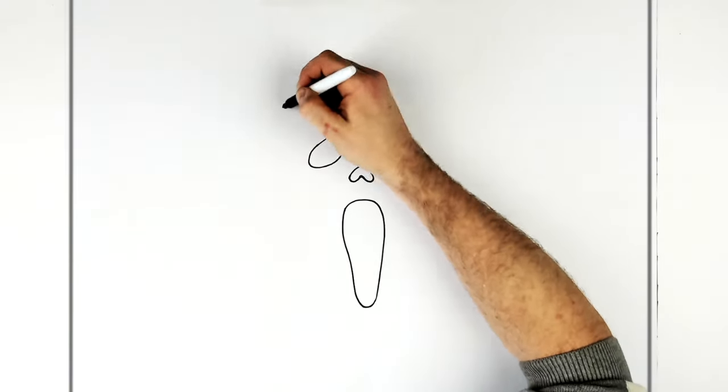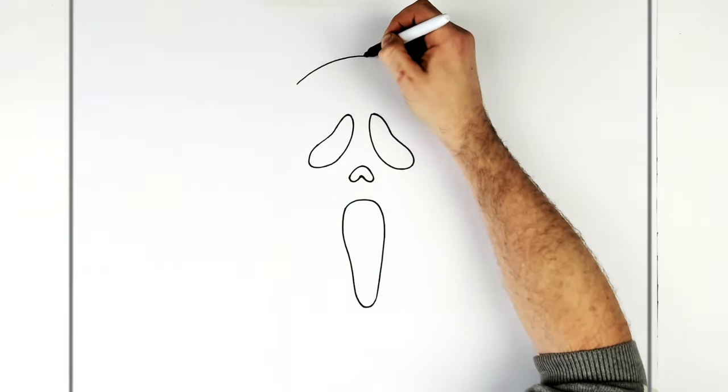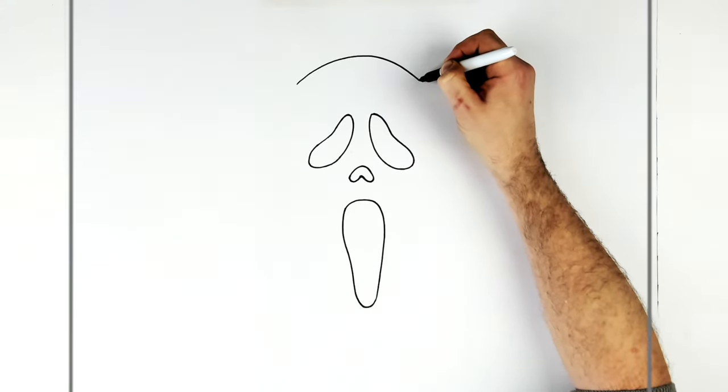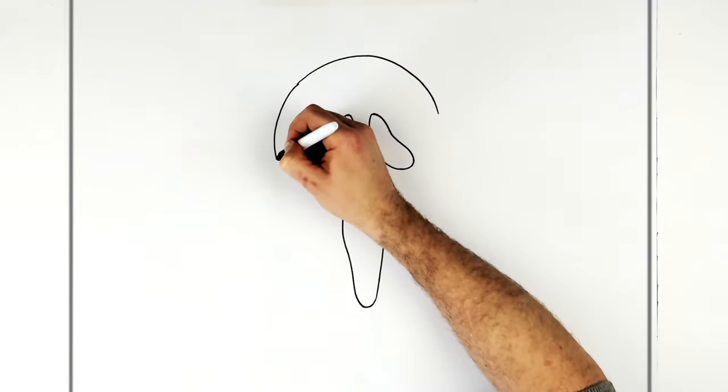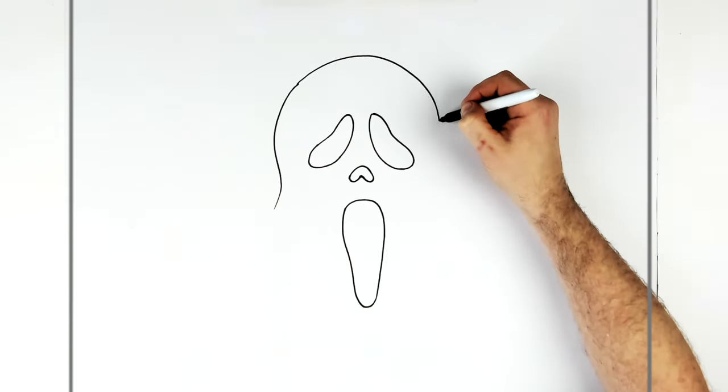So we've got the top of the head and the hood. The hood starts to come down the side of the face. And it kind of waves down here. So this is the hoodie part. It goes out that way a little bit.